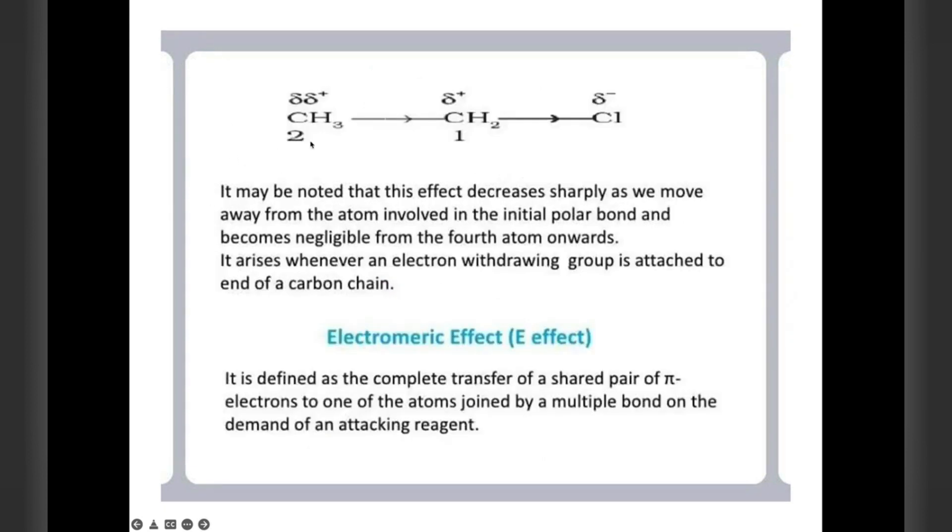Next, see here CH3-CH2-Cl. Here this is delta, this is slightly positive, partially positive, and CH2 is formed. This carbon atom becomes partially positive and Cl becomes partially negative. This effect decreases when we move away from the atom which is involved in the initial polar bond and becomes negligible from the fourth atom onwards. It arises whenever an electron withdrawing group is attached to the end of the carbon chain.